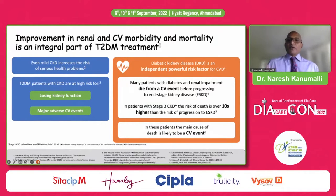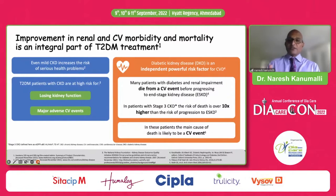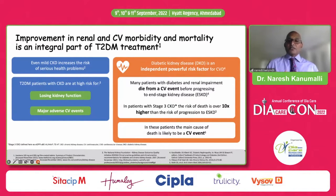Many patients with diabetes and renal impairment die from a cardiovascular event before progressing to end-stage kidney disease — you're more likely to die of the cardiovascular event than the kidney disease itself. In patients with Stage 3 CKD, the risk of death is 10 times higher.